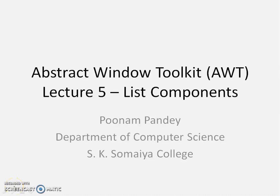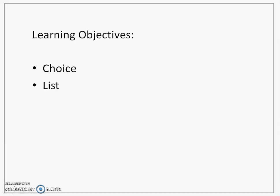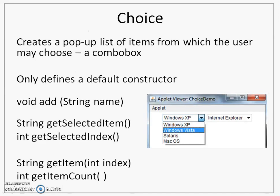In this lecture, we are going to look at list components of java.awt. There are two components that we are going to look at: one is Choice, another is List. The first class is called the Choice class, which will help me to create a pop-up list.